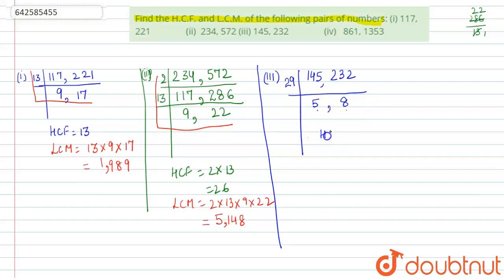And the HCF is 29. And for LCM, let's draw our L and multiply all the numbers along the L. So 29 × 5 × 8 will give us the LCM, so the LCM is 1160. So now let's move on to the next problem.